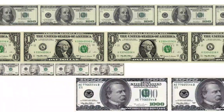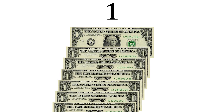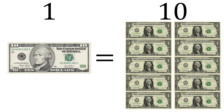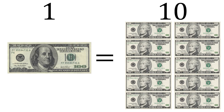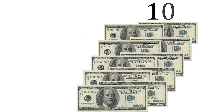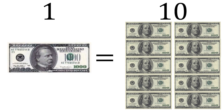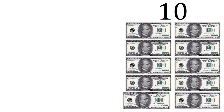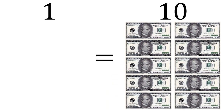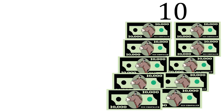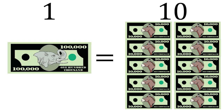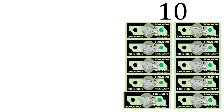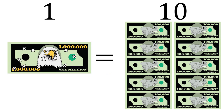That's called place value. Let's imagine that we can make paper money for any amount that we want. This numeral could mean a $1 bill. 10 $1 bills is the same as one $10 bill. 10 $10 bills is the same as one $100 bill. 10 $100 bills is the same as one $1,000 bill. We can imagine 10 $10,000 bills being the same as one $100,000 bill. We can imagine 10 $100,000 bills being the same as one $1,000,000 bill.